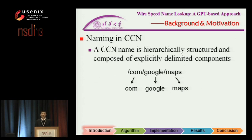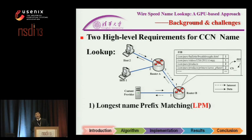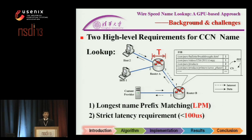Let's have a quick look at naming in CCN. Although it's not standardized, we can use URL-style names to build a name table. Here is an example for Google Maps. A CCN name looks like a hierarchical structure composed of components separated by slashes. There are two high-level requirements for CCN name lookup: first is longest prefix matching, and second is a strict lookup latency requirement.